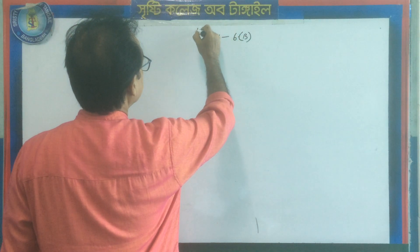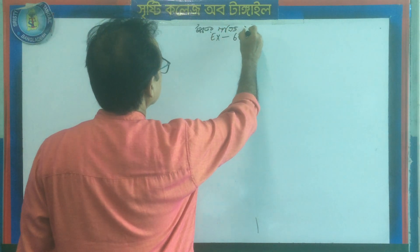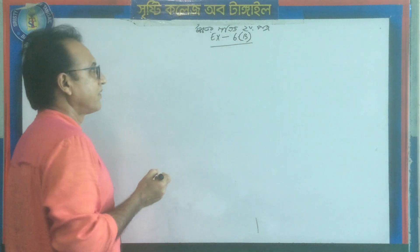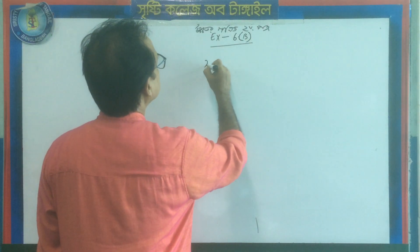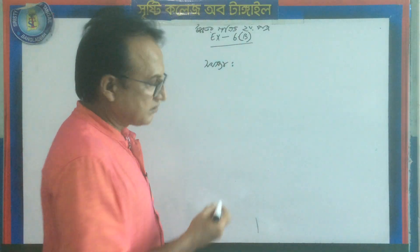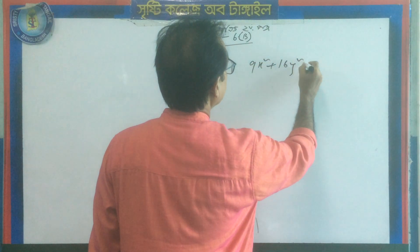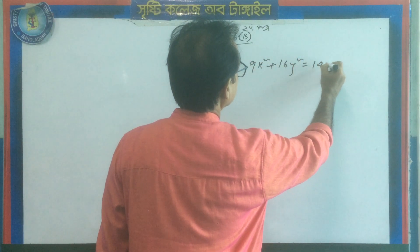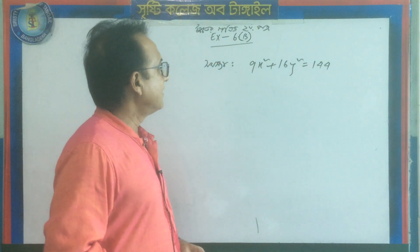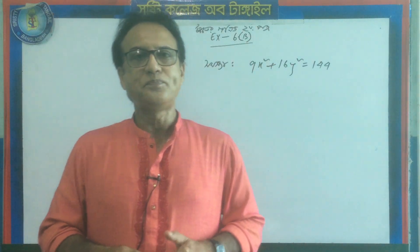Uchchchotar gonit Dithiwapatre, Exercise 6B. I will write this same thing as: 9x squared plus 16y squared equals 144. This is the first step of the formula.